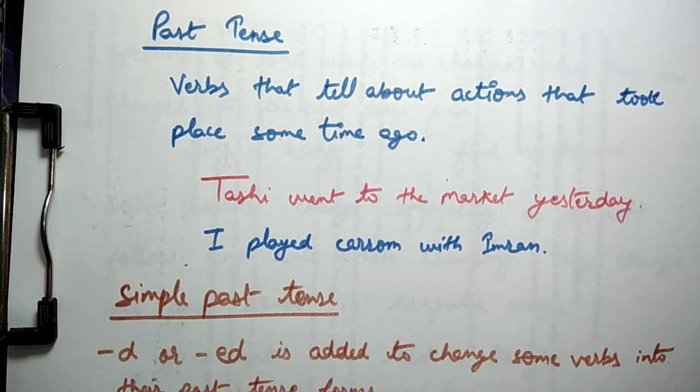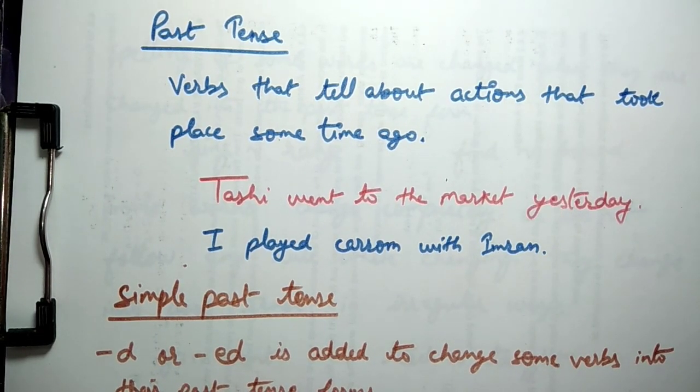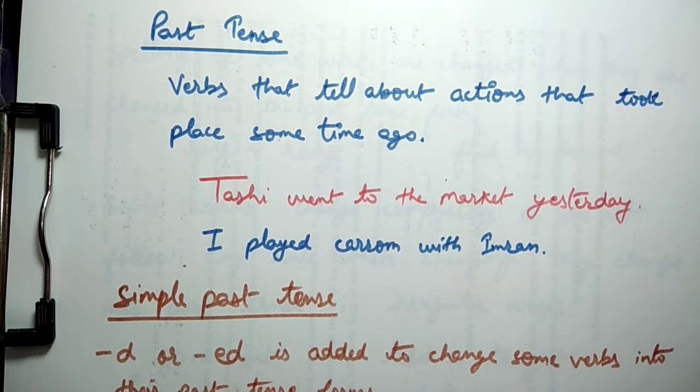We had also covered present continuous tense. Present continuous tense is used to talk about an action that is still going on at the time of speaking.